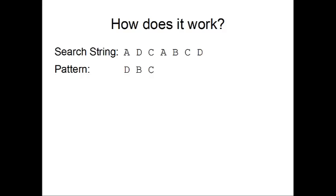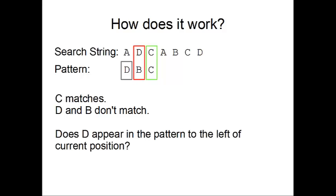We have another example to show the behavior of the Horspool algorithm if the mismatching character does appear in the pattern to the left of the current position. As before, C and C match, and D and B don't. We check for D in the pattern to the left of B, and this time there is in fact a D.